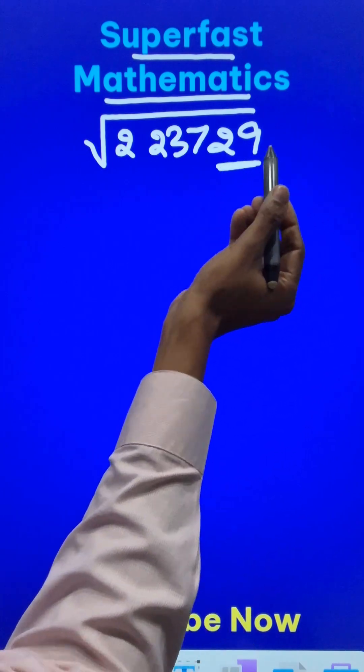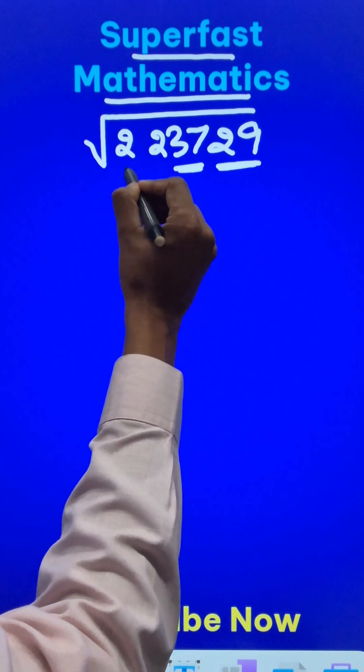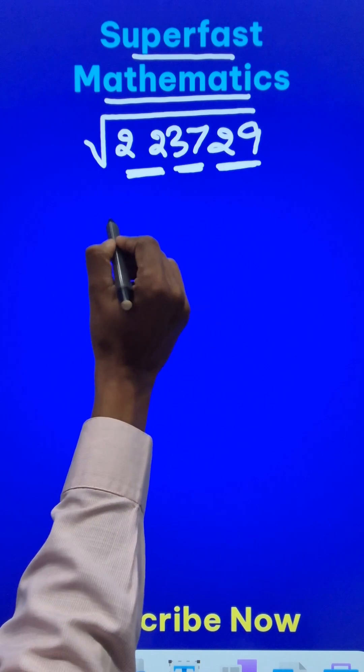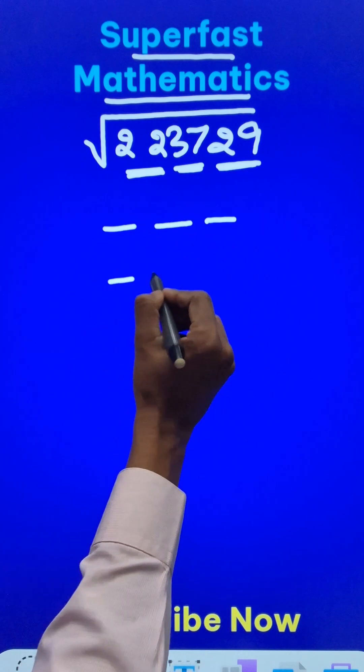Let's see how we pair the numbers first from the right hand side: 29, 37, and 22. So since there are 3 pairs we will have 3 digits in the answer, but there are 2 possibilities.